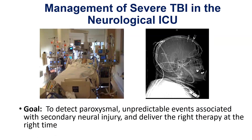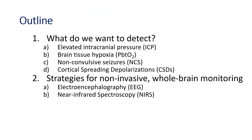Unfortunately, we are not in very good shape to understand all this data. What we want to do in the neuro-ICU is to detect paroxysmal, unpredictable events associated with secondary brain injury — detect them early so we can quickly deliver the right therapy at the right time. If there's a field of medicine that can benefit more from artificial intelligence and machine learning tools, I really don't know what it is. What are these paroxysmal neurologic events associated with secondary brain injury?